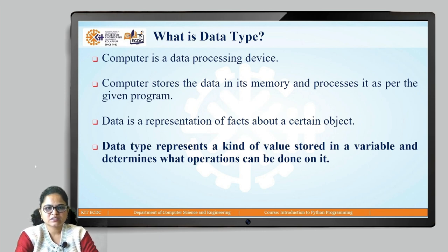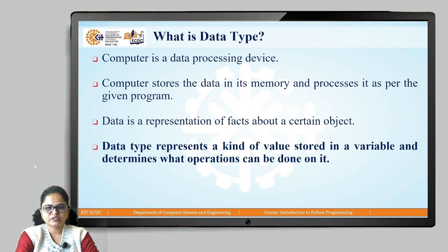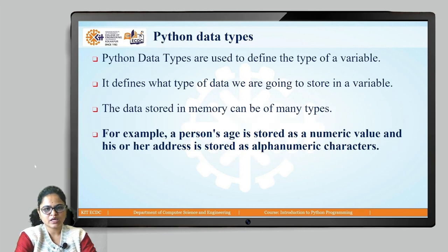A data type is defined as something that represents a kind of value that is going to be stored in a variable, and it also determines what kind of operations we can perform on it. It defines what kind of value we are going to store and the operations we can perform on the data type.